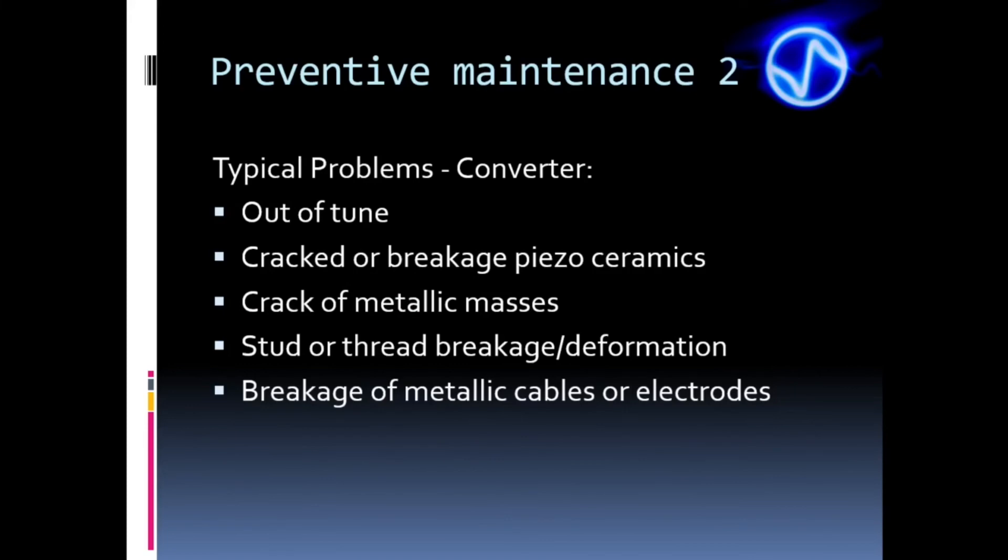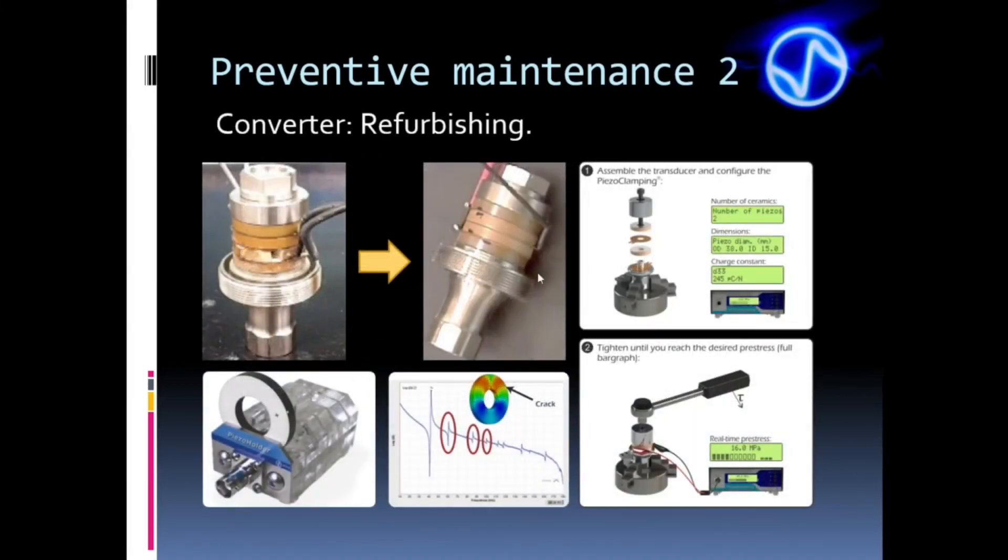Finally, if the problem is in the converter, we need to either replace or refurbish it. The typical problems of the converter are out of tune, cracked or breakage piezo ceramics, crack in metallic masses, stud or thread breakage or deformation, and also breakage of metallic cables or electrodes. To refurbish the converter, we must check whether the ceramics are intact or cracked using the TRZ piezo holder accessory. If there are cracked ceramics, replace them, clean the metal parts and restore their interfaces as in preventive maintenance. Restore the electrodes. Then, reassemble the converter with controlled press stress. We should use the piezo clamping test equipment for press stress control.